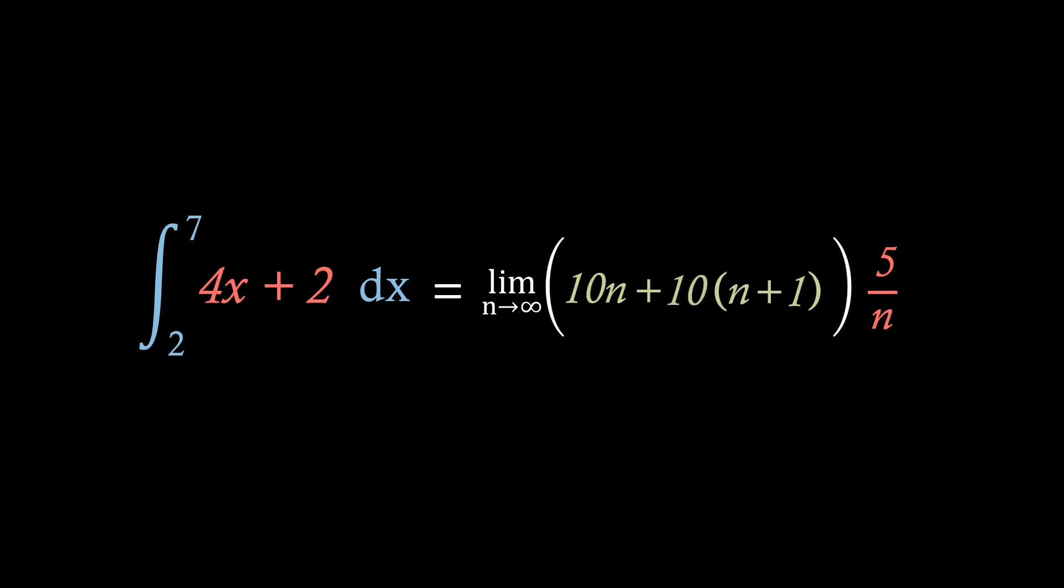So, if we start to expand and simplify inside these brackets, we see that we'll end up with 10n plus 10n plus 10, overall giving us the limit as n goes to infinity of 20n plus 10 times 5 over n, which we just need to expand before we can take the limit itself. Here, we see that we're left with the limit as n goes to infinity of 100 plus 50 over n.